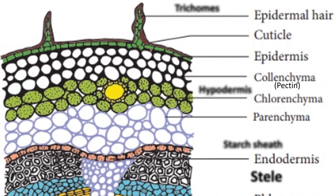The epidermis is the outermost layer. It is covered by cuticle. It may also show stomata. This epidermis shows multicellular structures which are called epidermal hairs or trichomes.